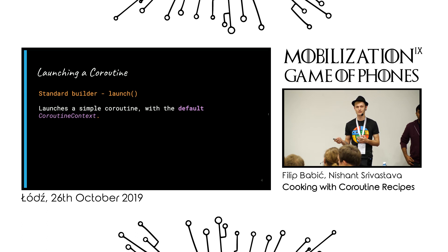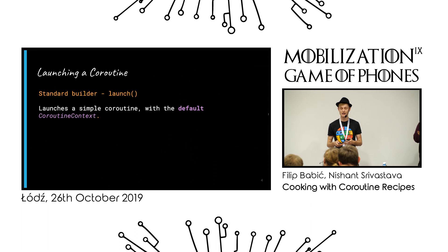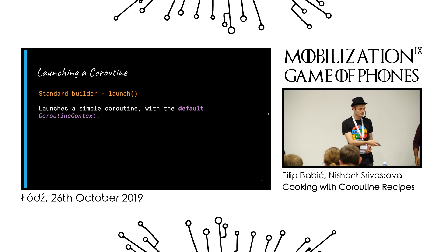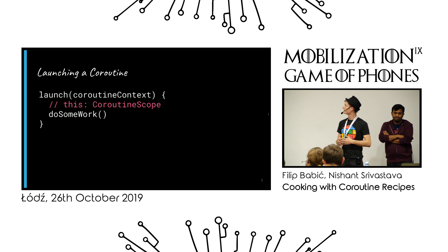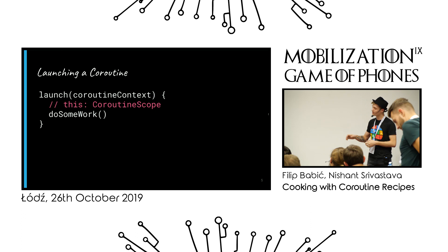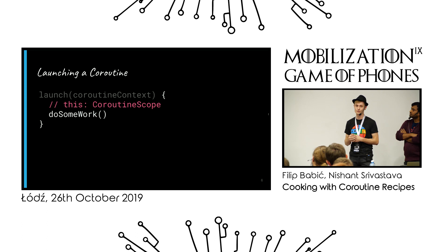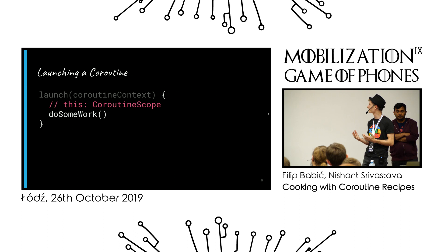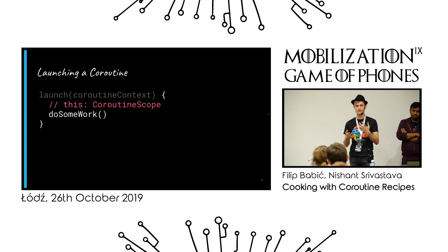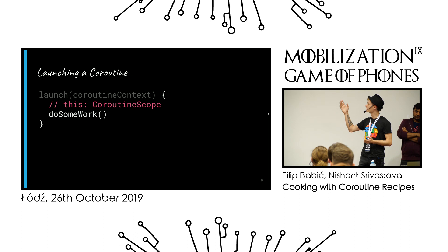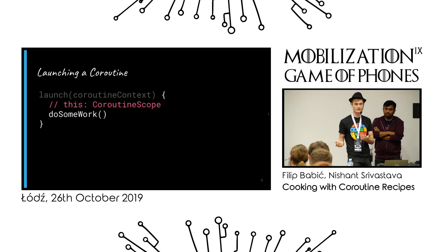The coroutine scope is the lifecycle component of coroutines — how long they run and when they get cancelled. The standard launch builder is simple: you say launch, give it some context, and within the block you can do some work. It will be launched in a different thread depending on the coroutines dispatcher — main thread, background thread, IO thread pool, and so on.